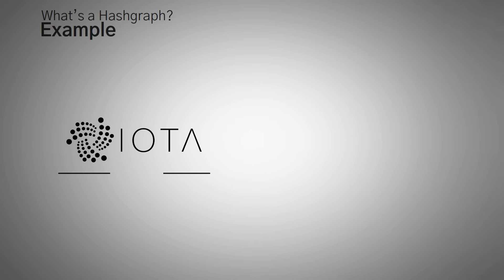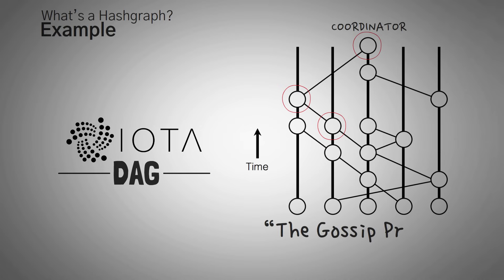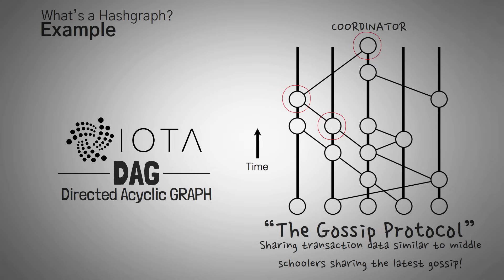IOTA also uses a DAG, and the way they ensure nodes aren't lying is by using something called a coordinator — which is quite controversial and basically means it's centralized. Hedera does something similar, except they call it the gossip protocol. One node telling another node about yet another node has been dubbed the gossip protocol — very much like gossip in middle school, where nodes constantly share transaction data. Since all this gossip is in the form of hashes and uses a DAG (Directed Acyclic Graph), you can see where Hedera came up with the name Hashgraph.